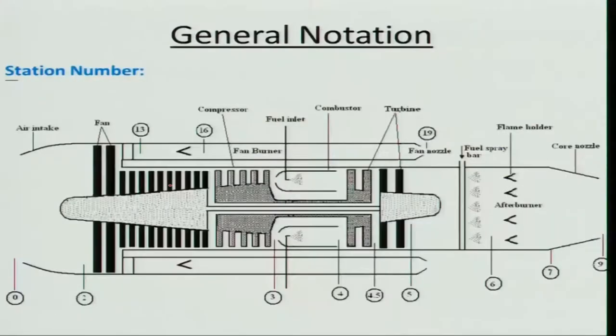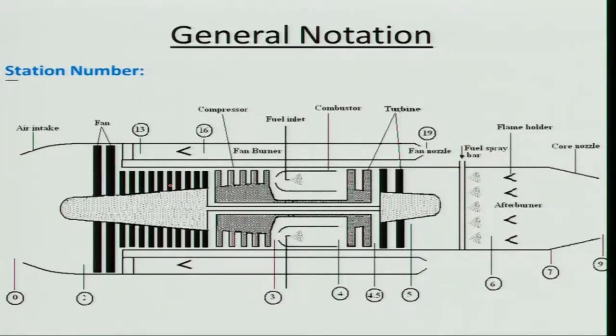For cycle analysis, let us look at general notation. I have taken a complex example — a turbo-fan engine with afterburner. Station numbers 0 to 9 are used for the core engine. Station 0 to 1 is the supersonic air intake, and 1 to 2 is the subsonic air intake — relevant for fighter aircraft with supersonic inlets.